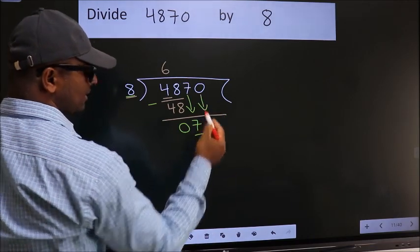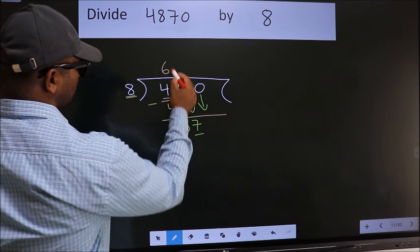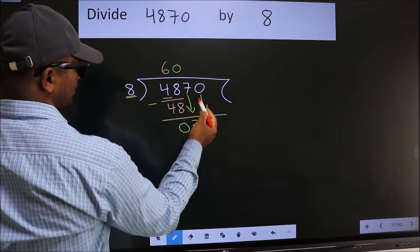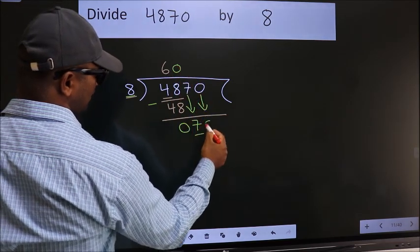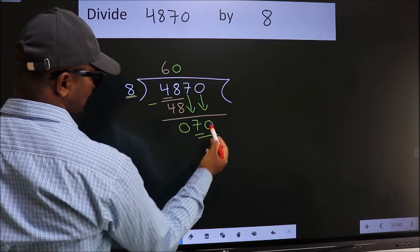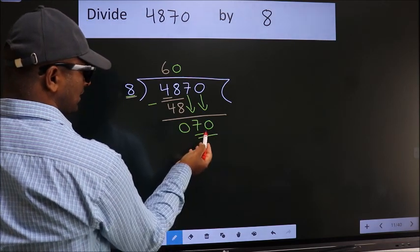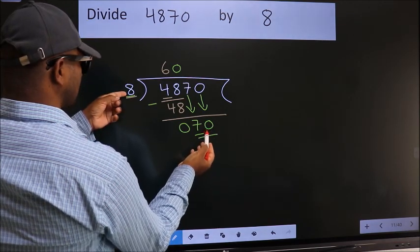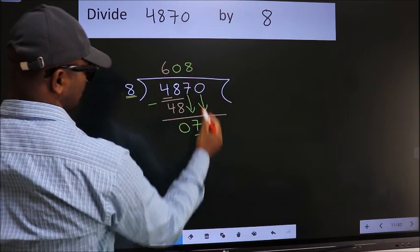And the rule to bring down the second number is put 0 here, then only we can bring down this number. So 70. A number close to 70 in the 8 table is 8×8=64.